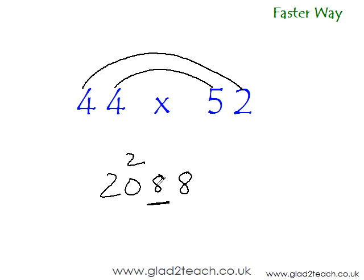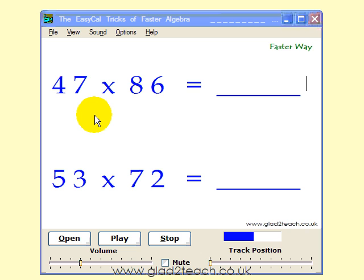So now I'm sure that you can directly multiply any two-digit number with any other two-digit number in just a few seconds. Similarly, in the next videos of this EasyCal series, we would be learning how to directly multiply any two-digit number with any three-digit number.